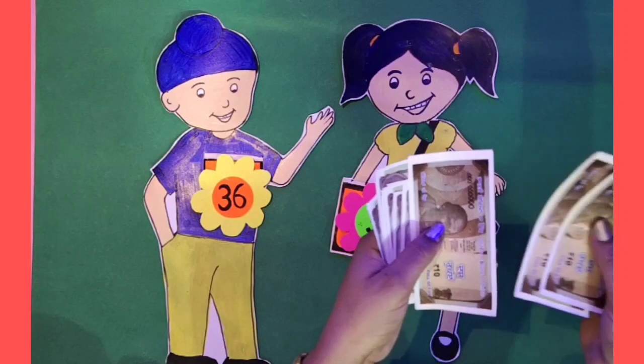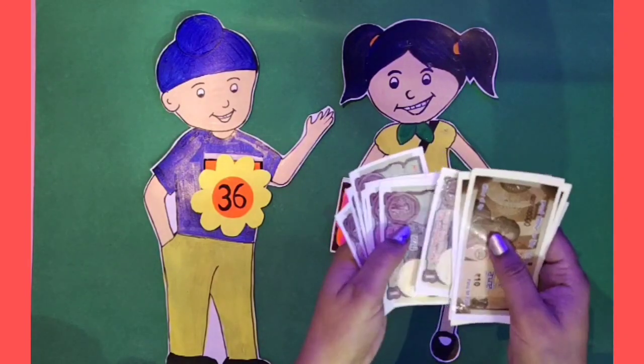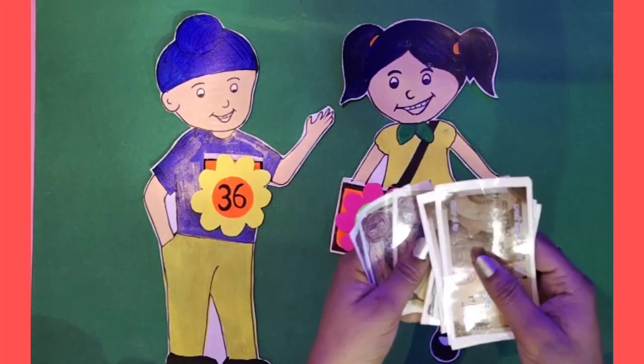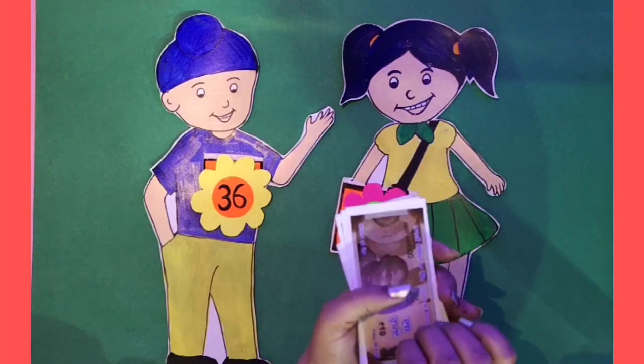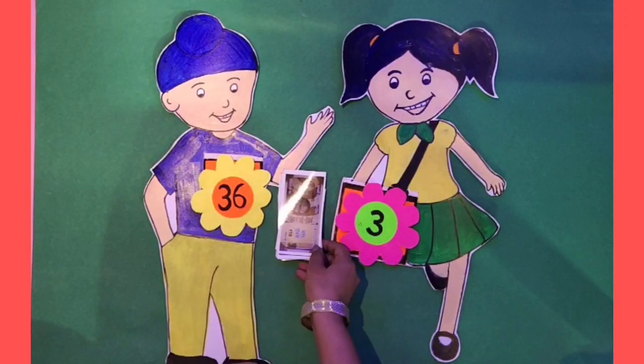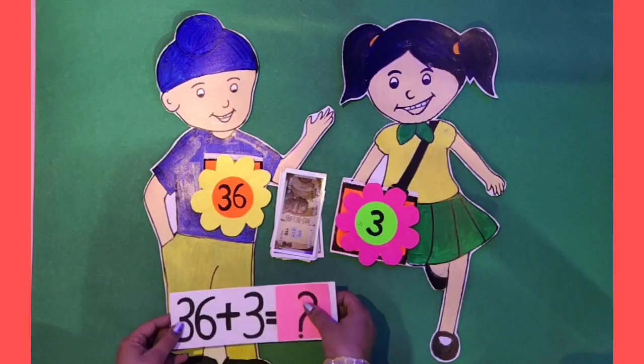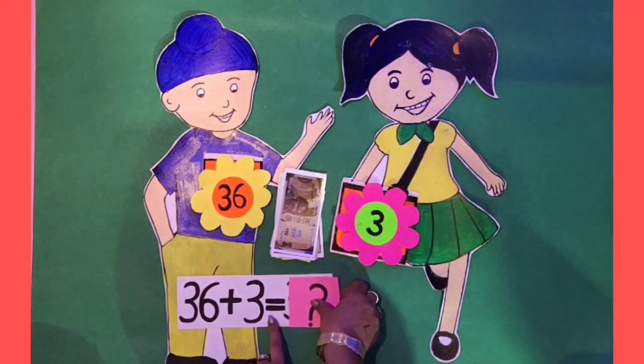10, 20, 30, 31, 32, 33, 34, 35, 36, 37, 38, 39. So, both of them have 39 rupees. That means 36 plus 3. The answer is 39.